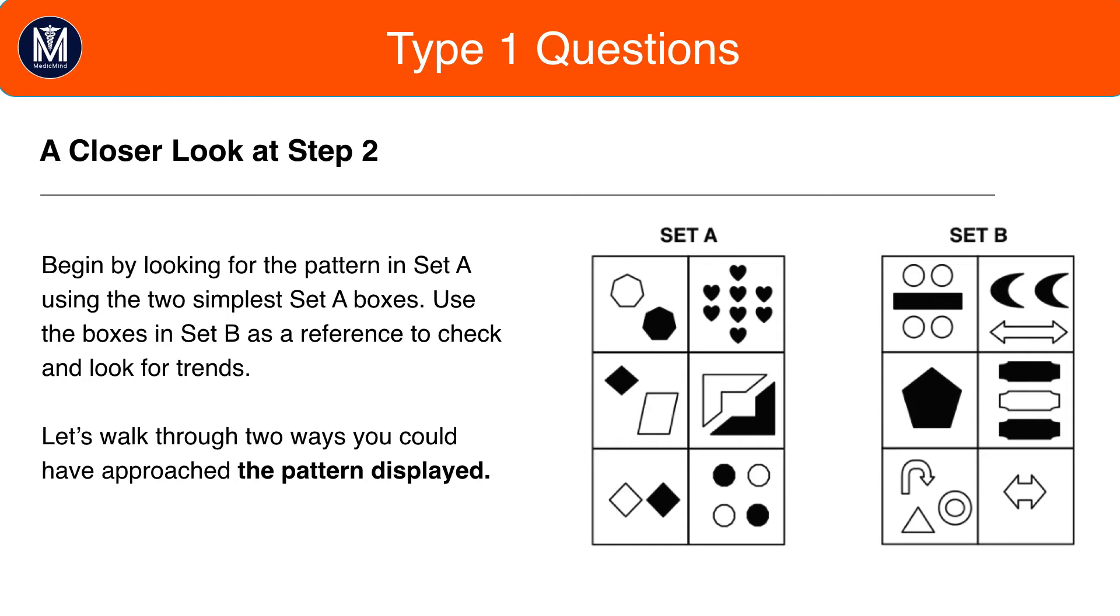Whereas, if the pattern was, in Set A, there's always a triangle in every box, and in Set B, there's always a circle in every box, it'd be very difficult to find the pattern by comparing A and B together. Instead, you'd work out the pattern for A first, and then for B afterwards, or vice versa.